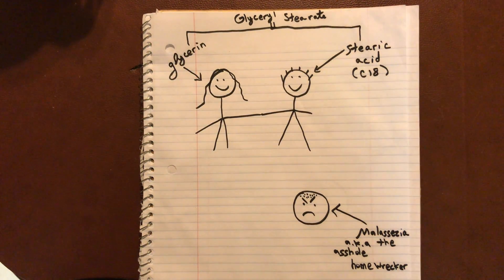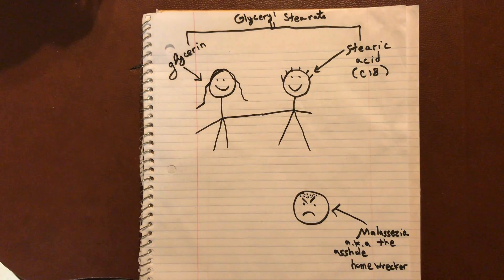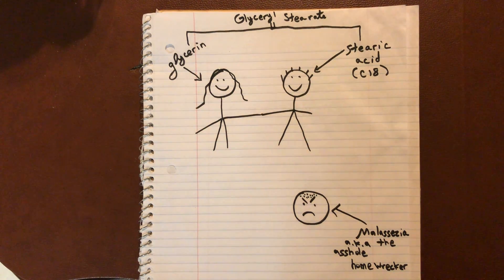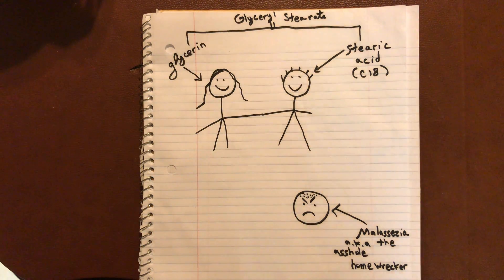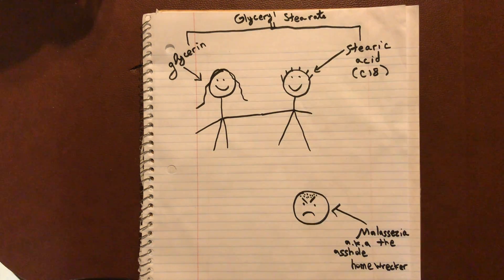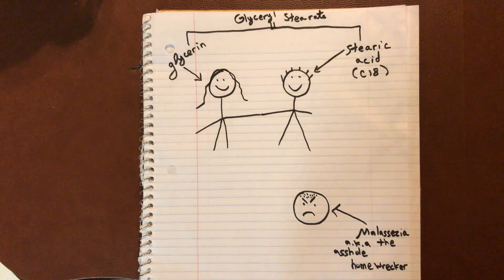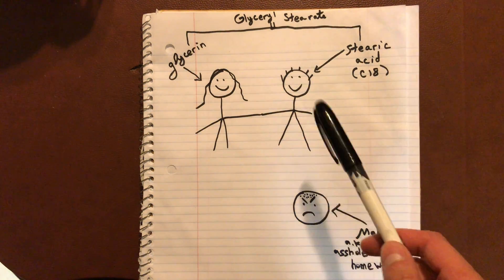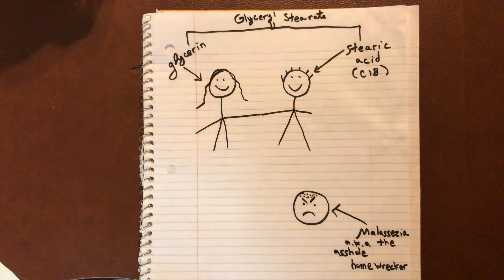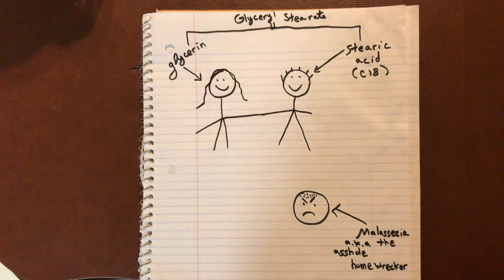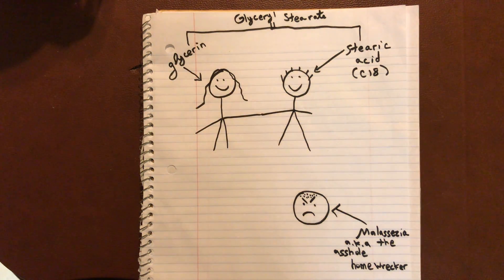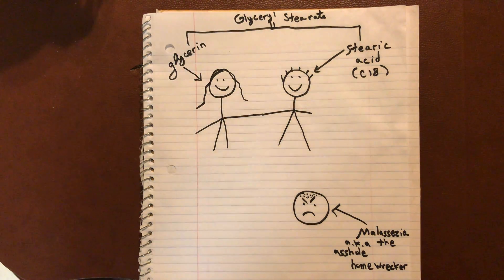As I was writing this blog post, I kind of realized it was very complicated to try to explain why esters are bad in the context of malassezia over text. So I decided I'm going to make this quick video to hopefully explain to everybody. We're going to be using glycerol stearate as an example. And just a disclaimer — this is not the actual chemical structure of glycerol stearate. I'm using a love relationship example because I think it will help make sense of all this stuff.